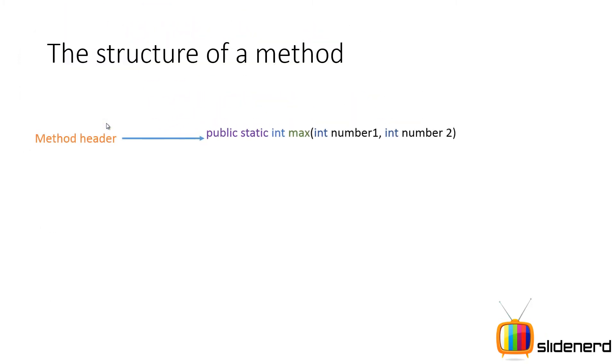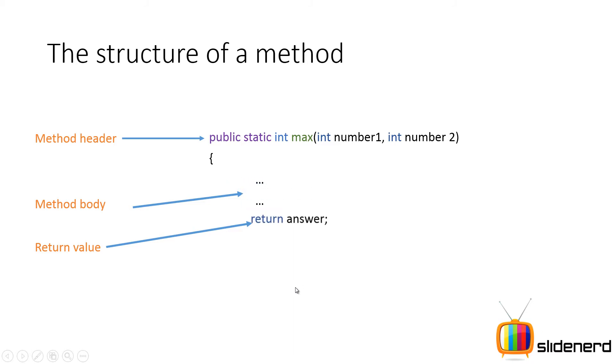What you have first is the method header, which is this complete statement including your method name, the parameter list, the return type, and the modifiers if any. Then what you have is the opening braces, then whatever code you write inside becomes the method body. After that you have a return statement. Now remember it is not necessary that you have a return statement in every method that you make.